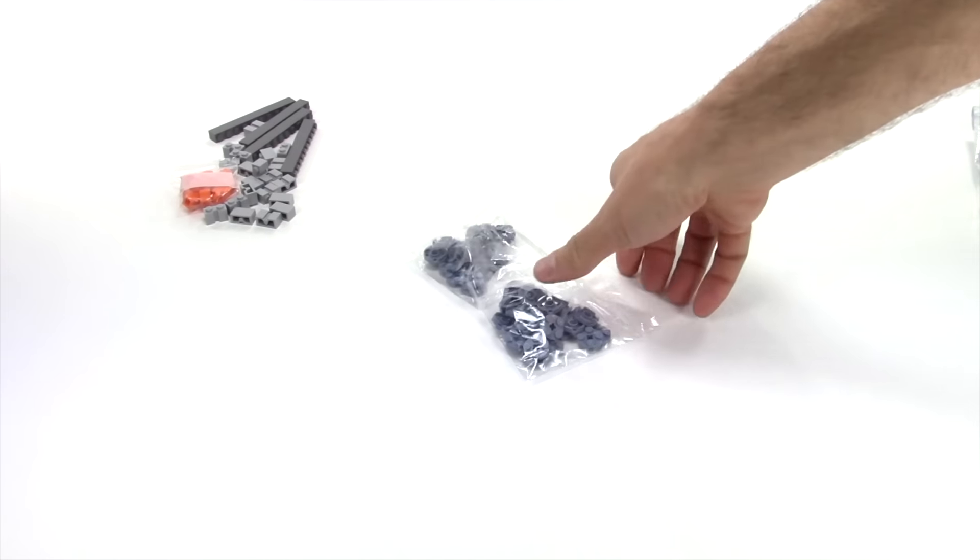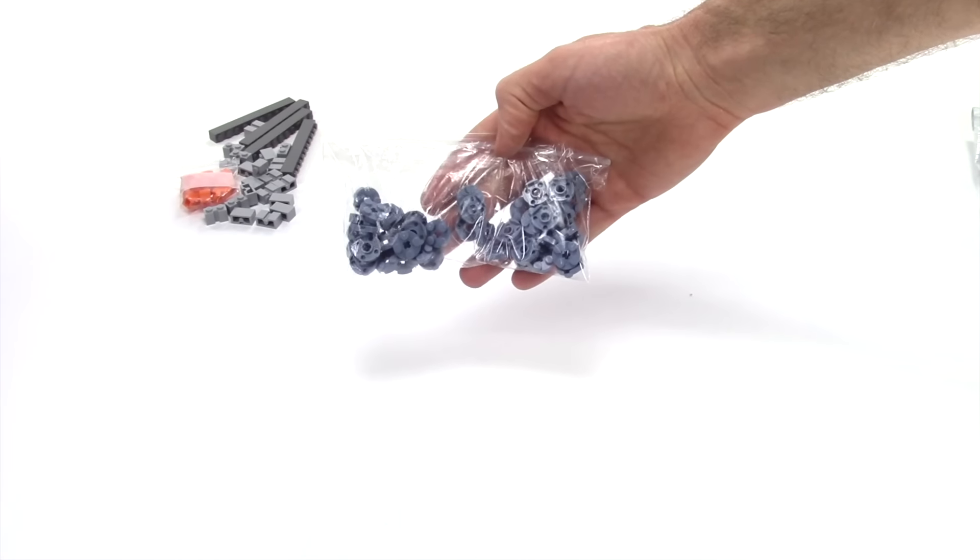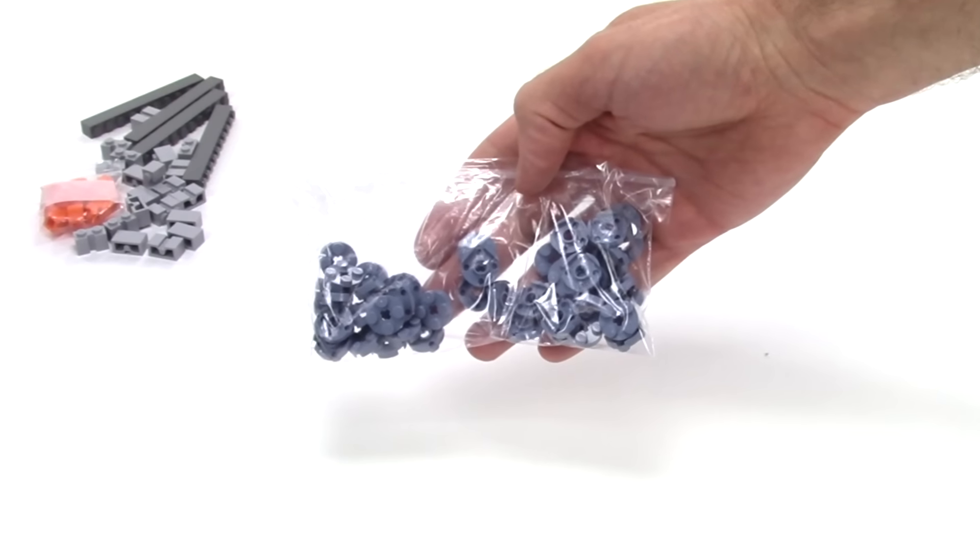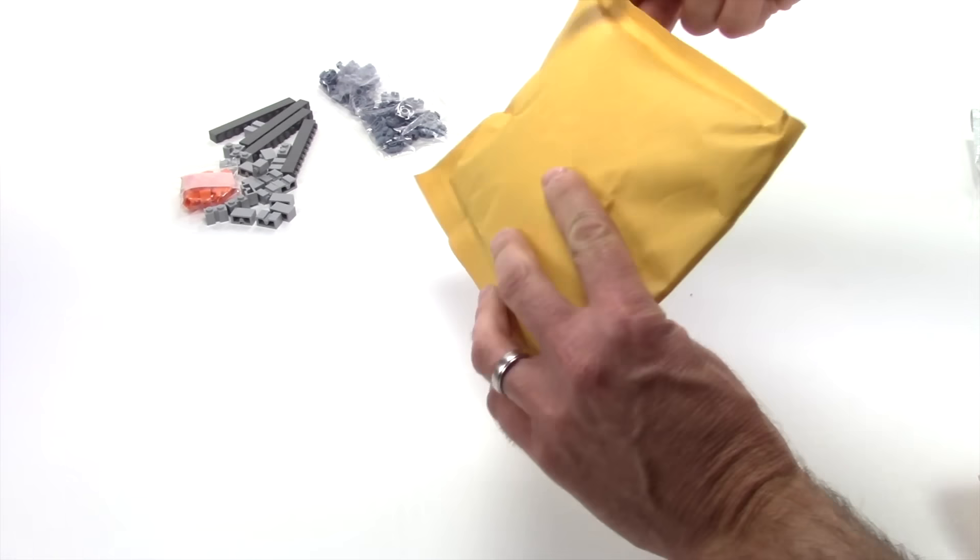This one was simple. I think I got 47 sand blue round 2x2 plates—those are for the moon base. Package three.